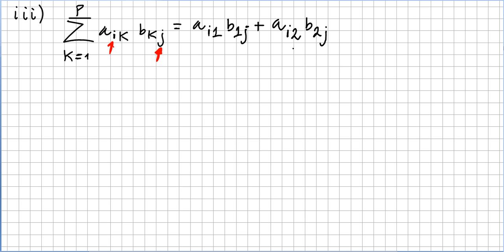Plus a_i3 b_3j, right, and all this will end in a_i, it will finish at p, a_ip b_pj.